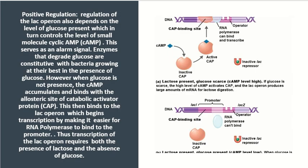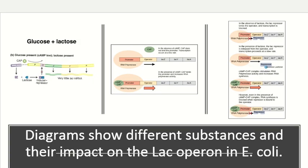Positive regulation of the lac operon depends on the level of glucose present, which in turn controls the level of the small molecule cyclic AMP (cAMP), serving as an alarm signal. Enzymes that degrade glucose are constitutive, with bacteria growing best in the presence of glucose. When glucose is not present, cAMP accumulates and binds with the allosteric site of catabolite activator protein (CAP). This then binds to the lac operon, making it easier for RNA polymerase to bind to the promoter. Thus transcription of the lac operon requires both the presence of lactose and the absence of glucose.